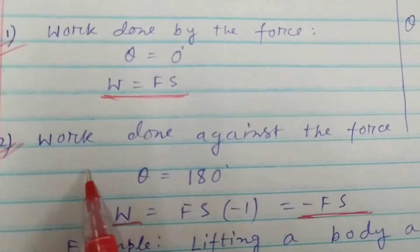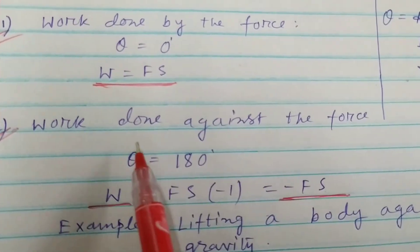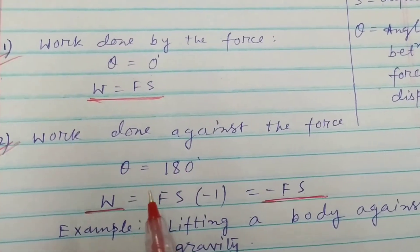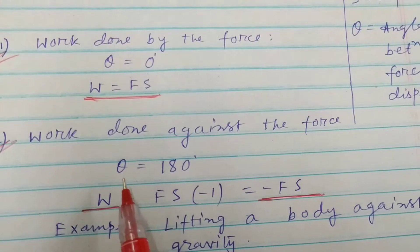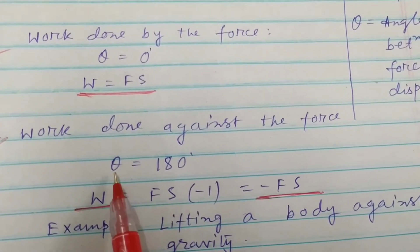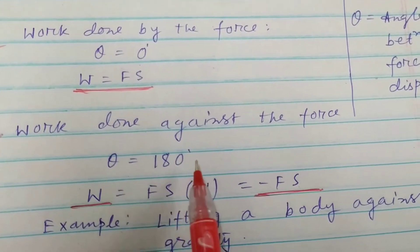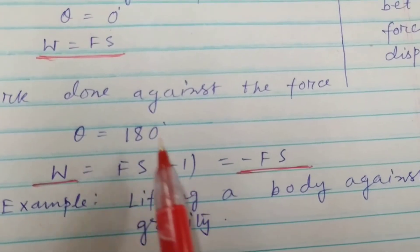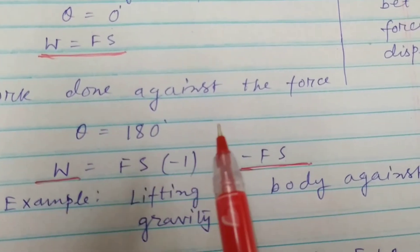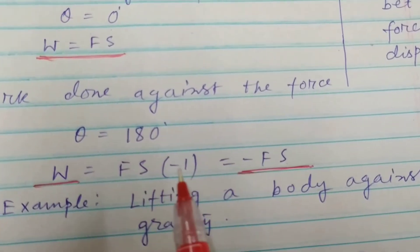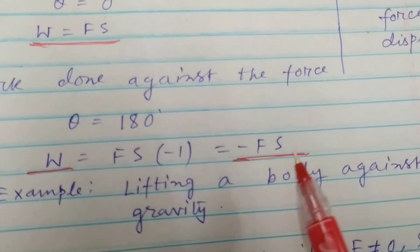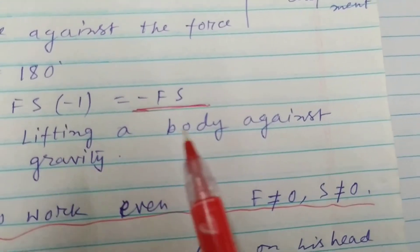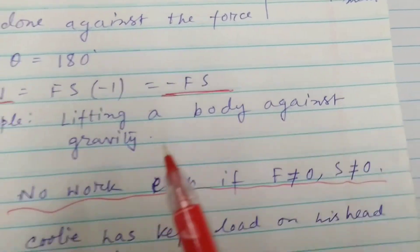Sometimes work is done against the force. When we lift a body vertically up, the work is done against the force, and in that case theta is equal to 180 degrees. W equals Fs times cos 180°, and the value of cos 180° is minus one, so W equals minus Fs. The example given is lifting a body against gravity.